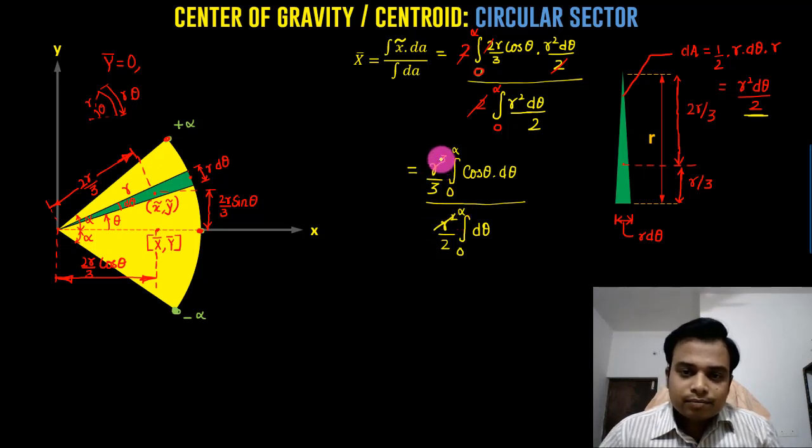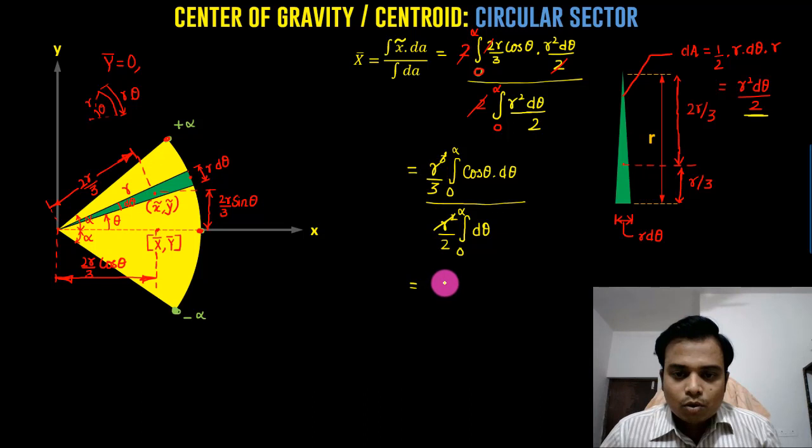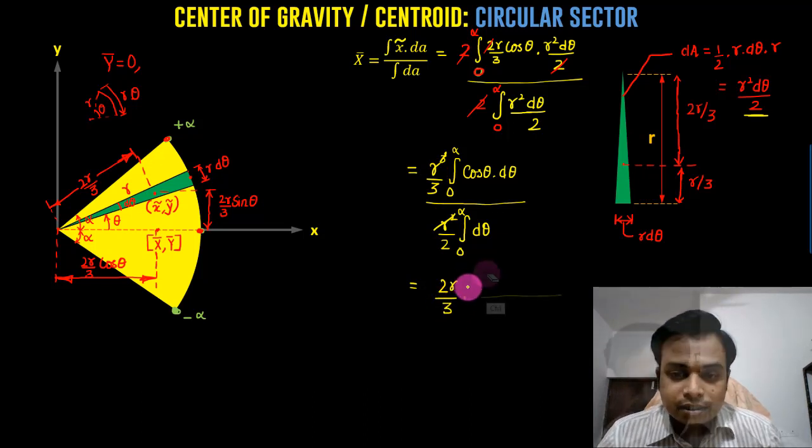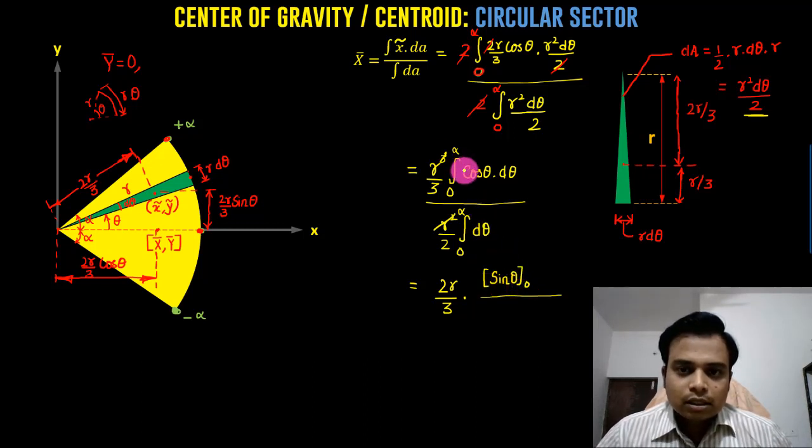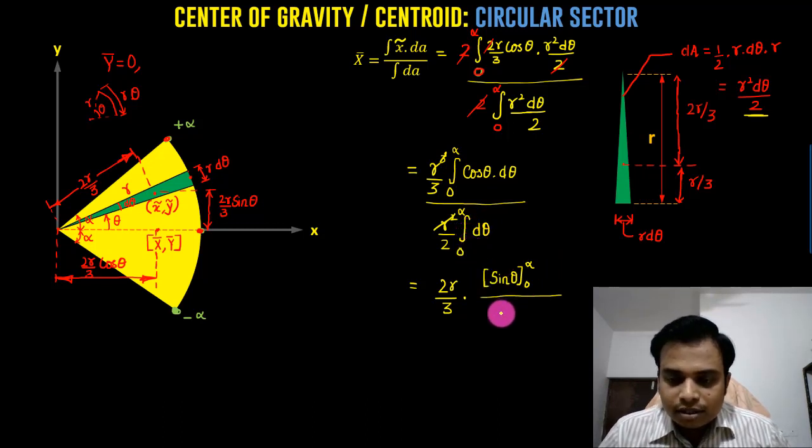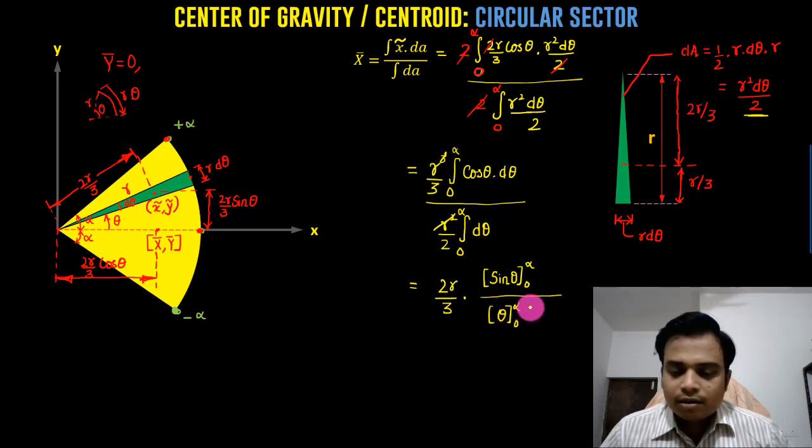So this r squared cancel out, 1 r will remain above, and this is going to be equal to 2r over 3. Now let's integrate. In the numerator, integration of cos theta is going to be equal to sine theta, and the limits are from 0 to alpha. In the denominator, we have theta from 0 to alpha.